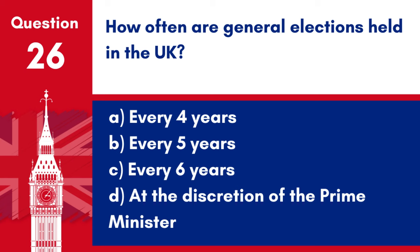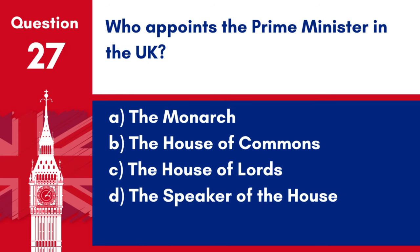Question 26. How often are general elections held in the UK? a. Every four years. b. Every five years. c. Every six years. d. At the discretion of the Prime Minister. Answer: b. Every five years. General elections in the UK are held every five years.